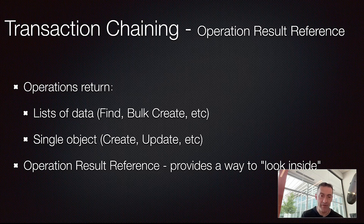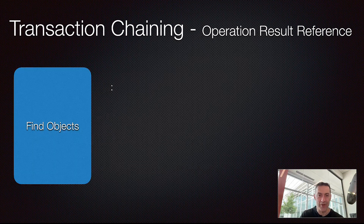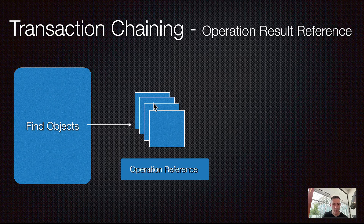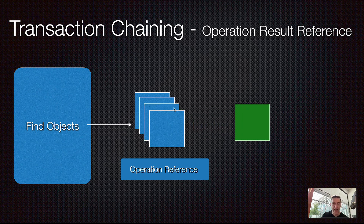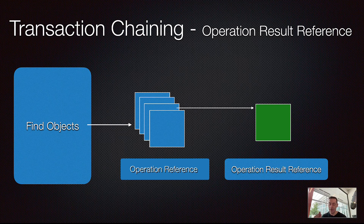Operation result reference is whenever you want to peek inside of the operation reference. With operation result reference, here's a quick demo to visualize and solidify what I was sharing. With find objects, it returns a collection of data — that's the operation result. If we want to reference one object in that collection, that object is the operation result reference. Similarly, if we want to look inside of a specific object returned by an operation and extract a property, that is also operation result reference.